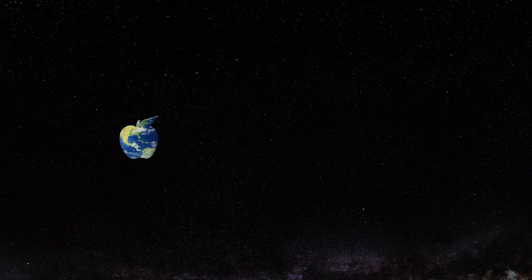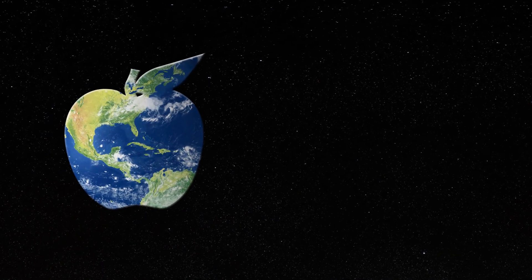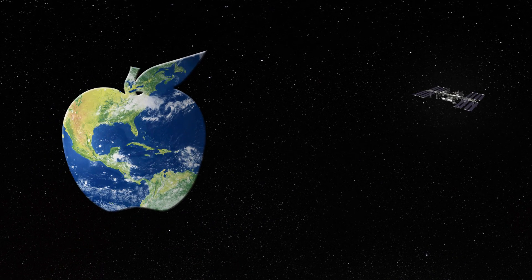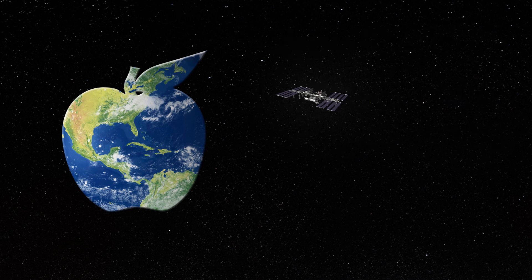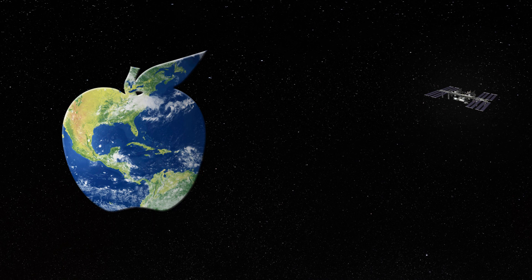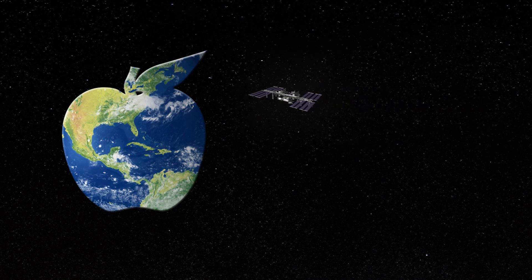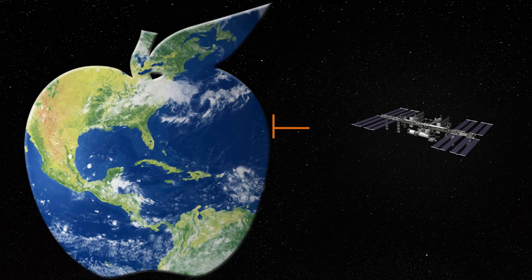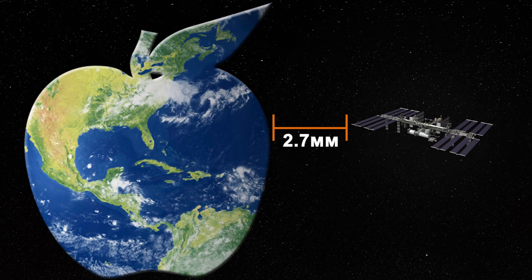and today we'll think of the Earth as an apple. If you shrunk the Earth to the size of an apple, how far would the ISS be from it? Maybe this far? How about this far? Nope. It would only be about this far. 2.7 millimeters from Apple Earth's surface.